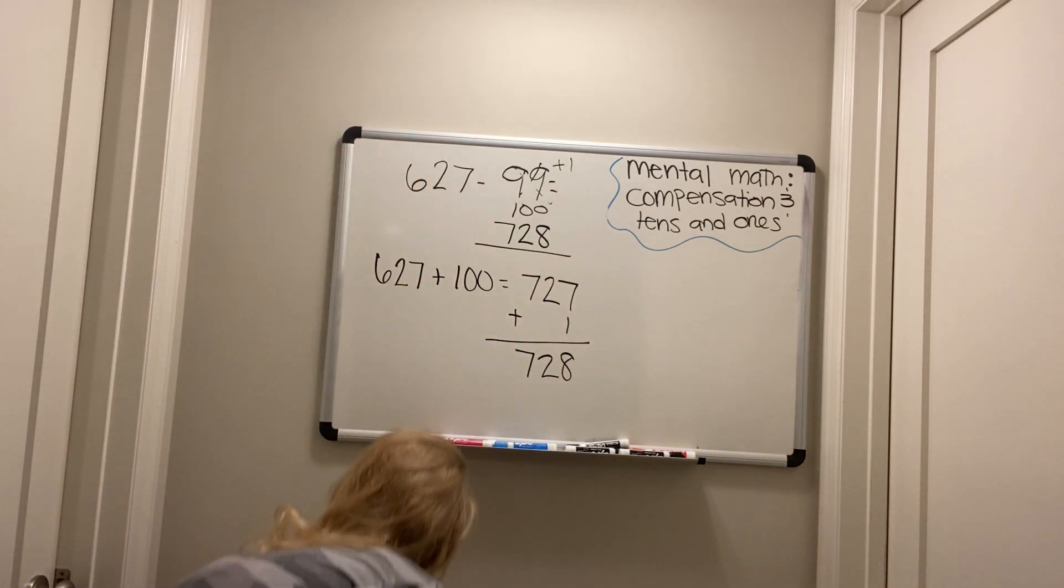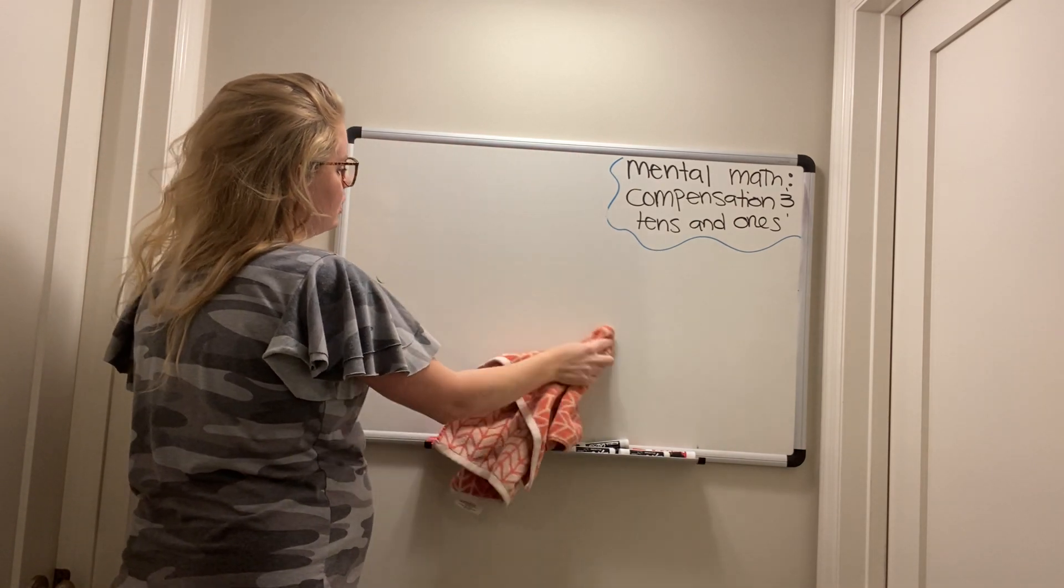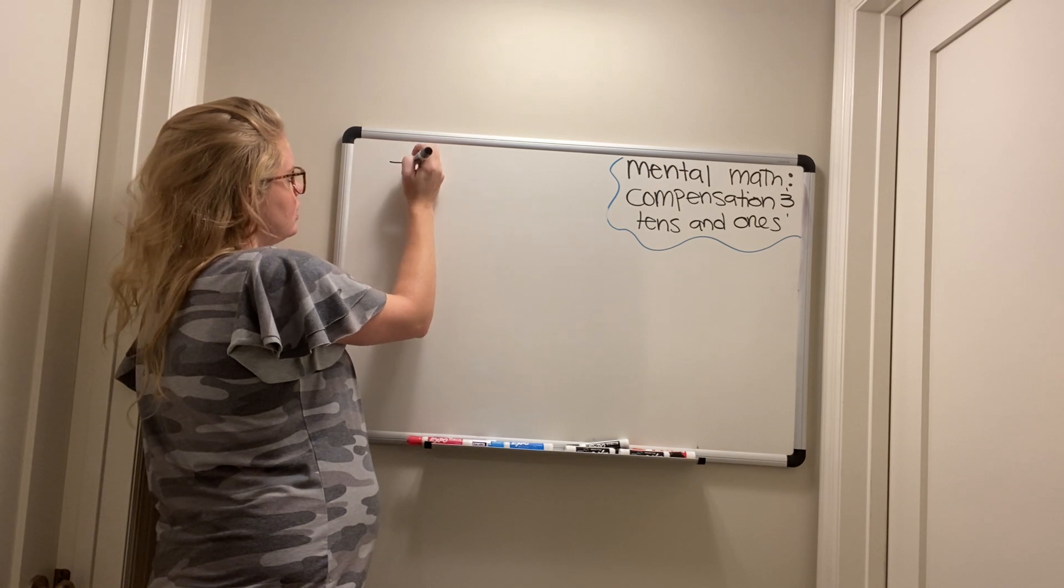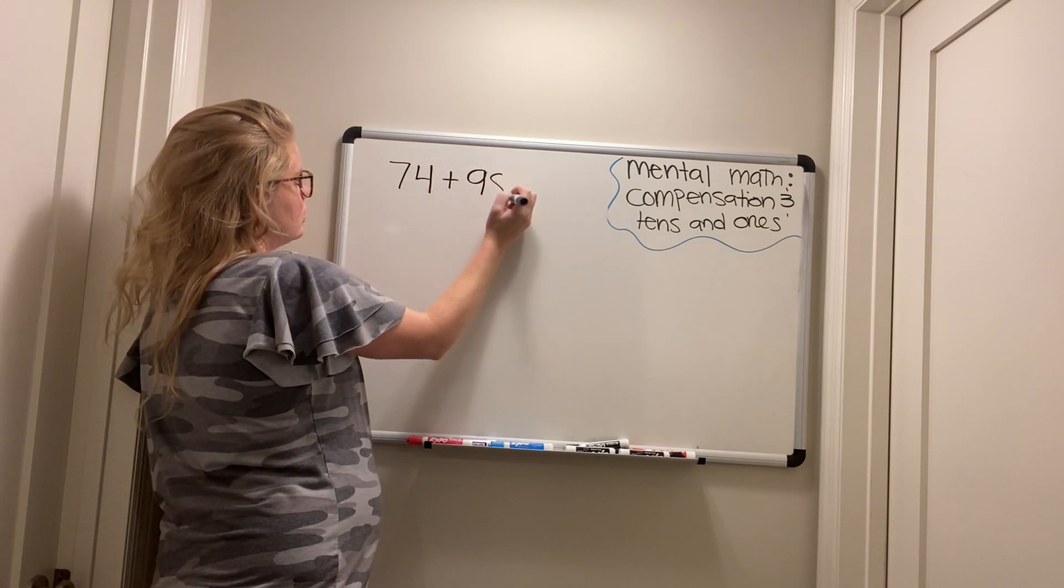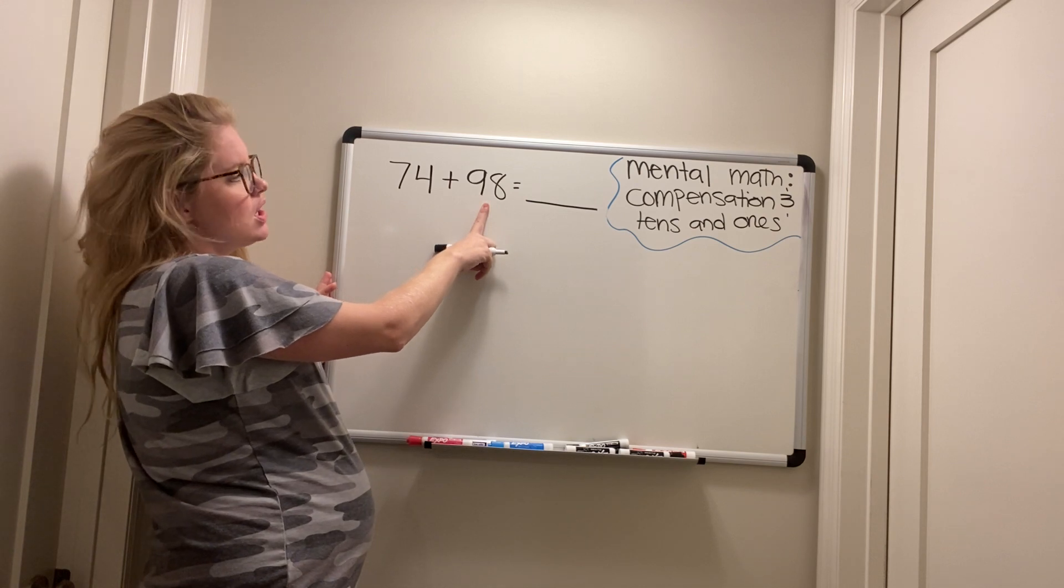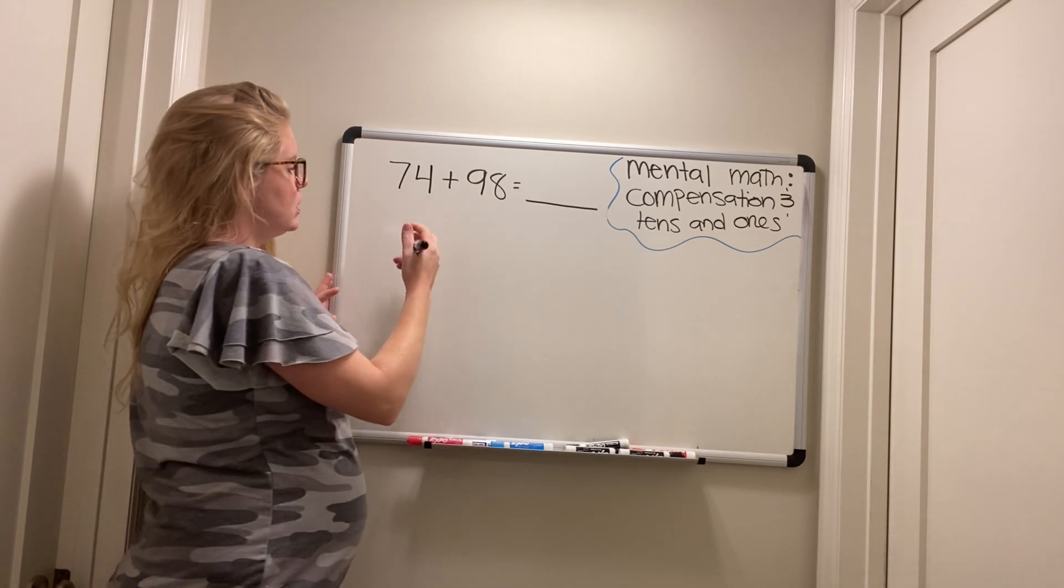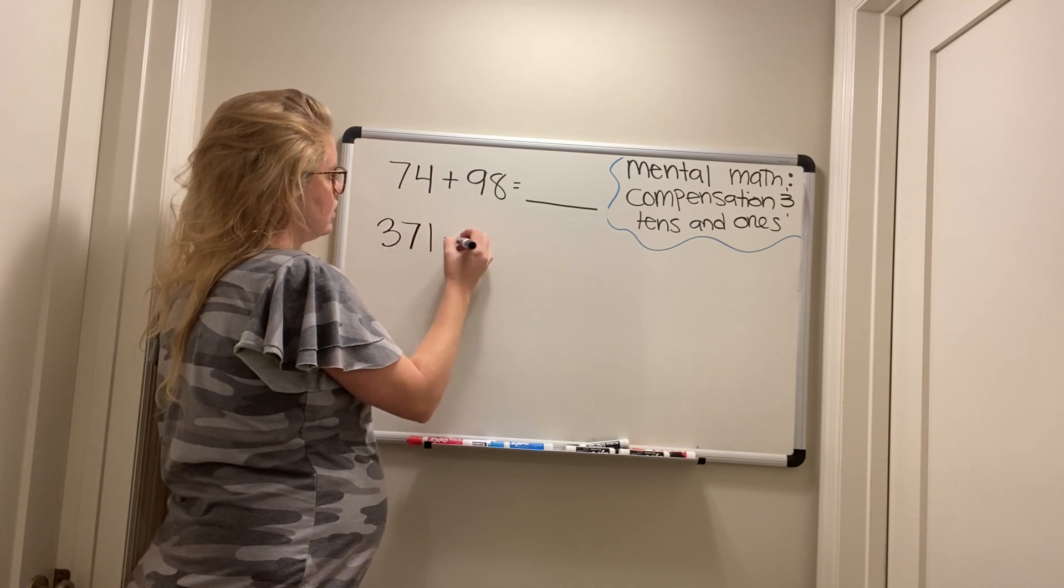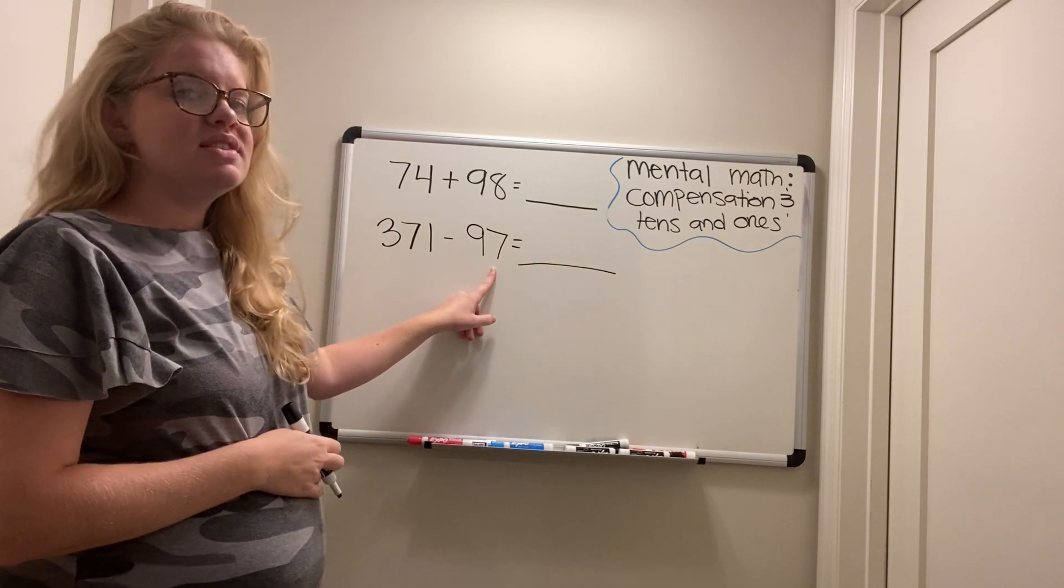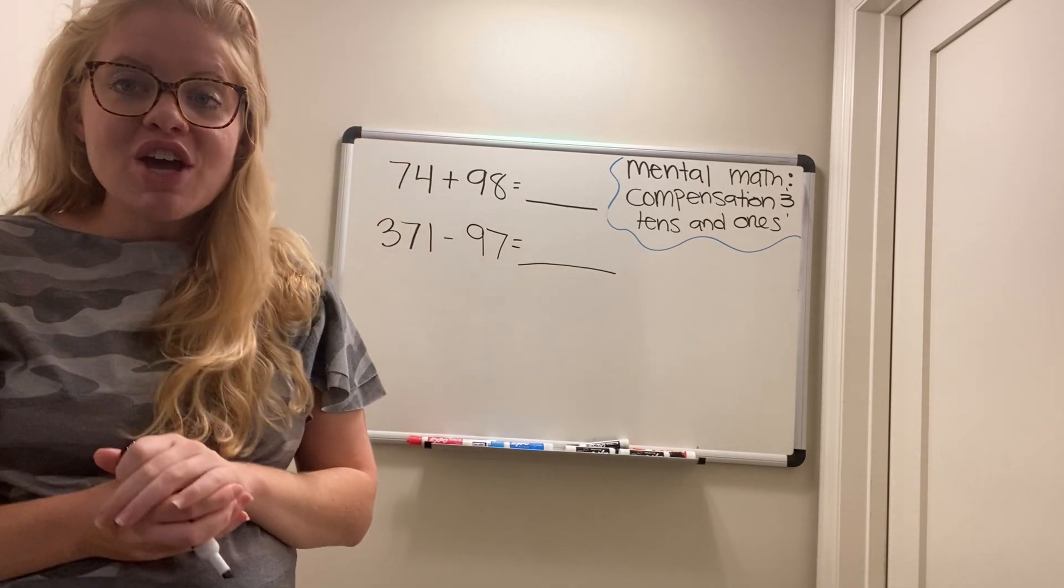All right. Here we go. I'm going to let you do one addition on your own and one subtraction on your own. Okay, here we go. This will be your addition. Now, ask yourself, when you change this to 100, are you adding too many or too few? Again, think about how we get from 97 to 100. And then at the end, are you adding too many or too few? Go ahead. Pause your device. Try this on your own.